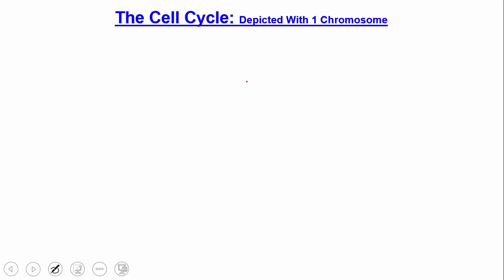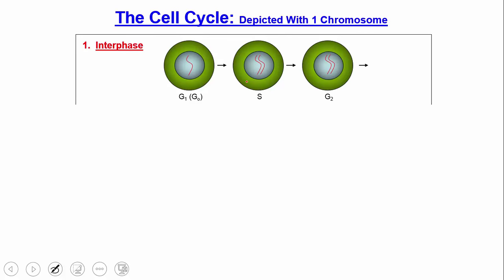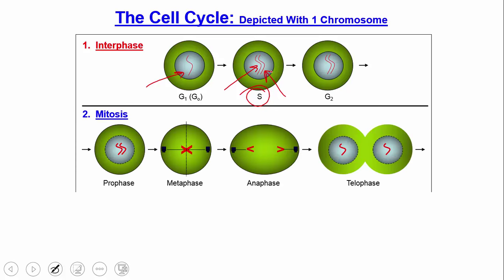Now let's draw the cell cycle with one chromosome all the way through — remember, this is happening for all 46 human chromosomes, but we'll use one for simplicity. The first part is interphase, with three subphases: G1, S, and G2. The key event is the S phase, where chromosomes are duplicated. So chromosome 15 from the mother becomes two copies of chromosome 15 from the mother, joined together at this stage.